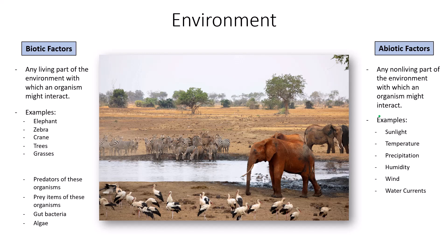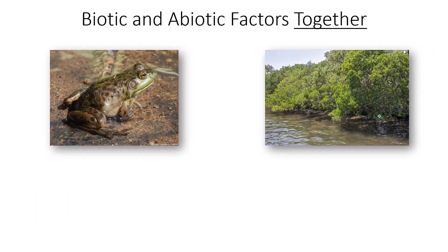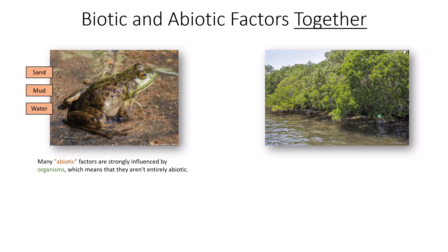Water currents are an abiotic factor — though limited in this pond, in other bodies of water they significantly influence temperature, precipitation, and humidity. Wind currents are another abiotic factor. pH — both of water and soil — influences whether plants grow, whether organisms can drink the water, or whether aquatic organisms can survive. Oxygenation and CO2 concentration also matter. When we focus on a frog, we can see how abiotic and biotic factors interact.